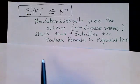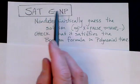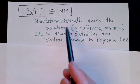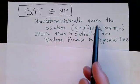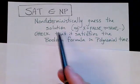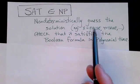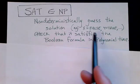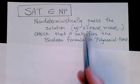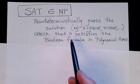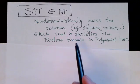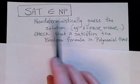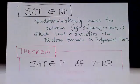First, let's note that SAT is in NP. What we can do is we can non-deterministically guess a solution. For example, the solution we saw in the previous slide, X is FALSE, Y is TRUE, and Z is FALSE. And then we can check that that solution satisfies the Boolean formula, and we can do that check in polynomial time. So that proves that SAT is a member of NP.